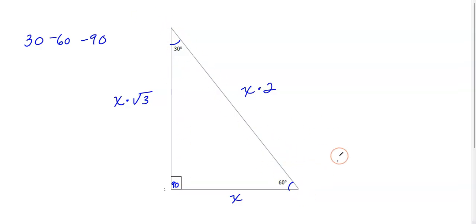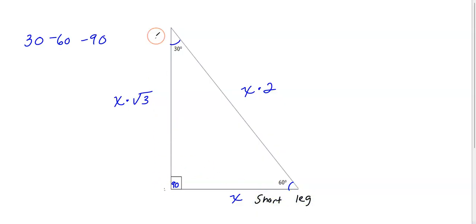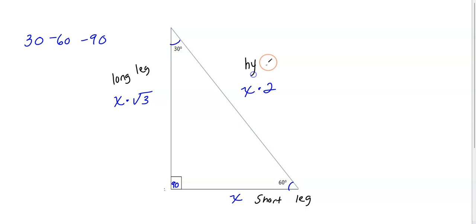It's not always easy to see that when looking at diagrams. There are special names for these: your shortest side is called the short leg; the next side across from your 60 degree angle is called your long leg; and the longest side across from your 90 degree angle is called the hypotenuse. You might want to write this down or take a screenshot.